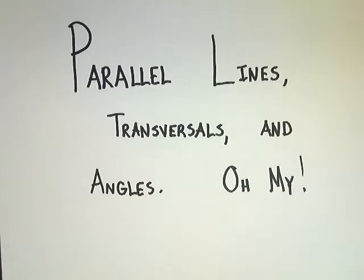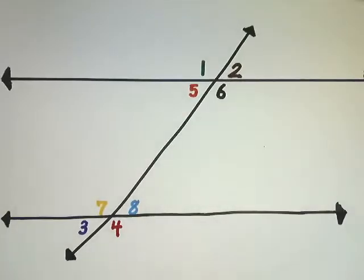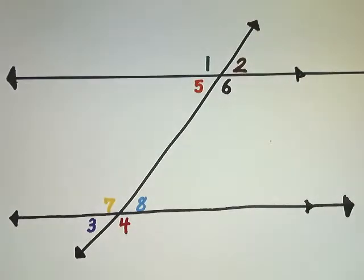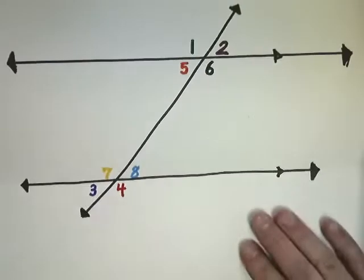This is a lesson on parallel lines, transversals, and angles. In all of the drawings today, if you see two lines that look parallel we're going to assume that they are parallel. Usually they'd be marked with a double arrow or single arrow symbol, but just go along with it and think that any lines that look parallel probably are.